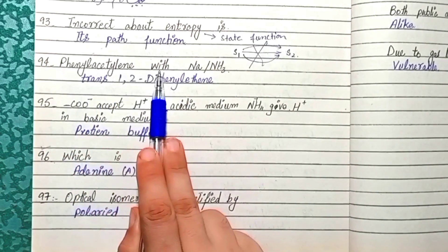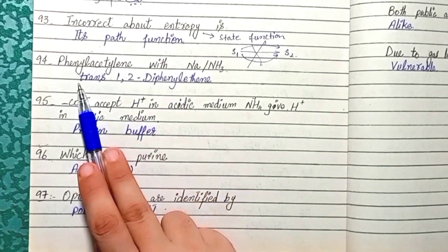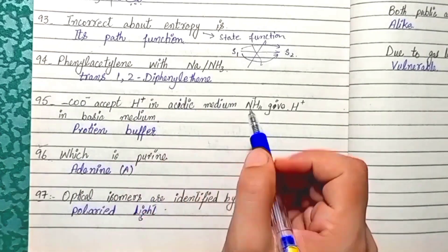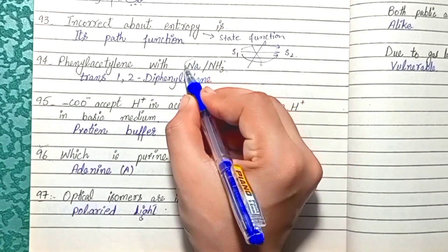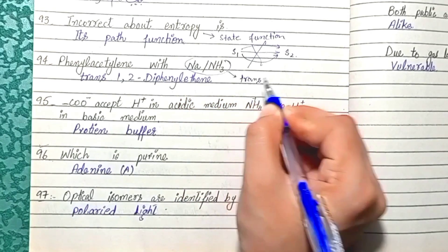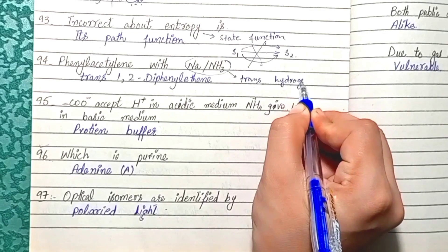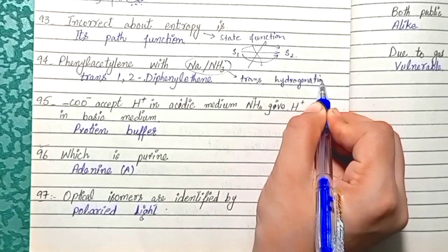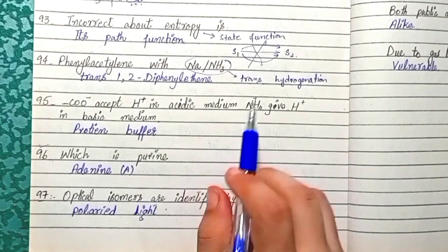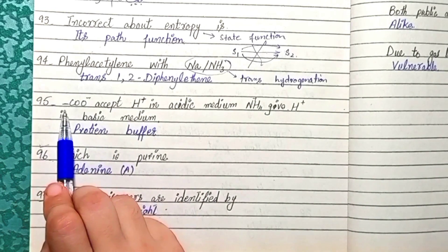Question 94: Phenyl acetylene with sodium in liquid ammonia will form trans-1,2-diphenylethene via trans-hydrogenation, where the addition of hydrogen occurs on opposite sides of the double bond.